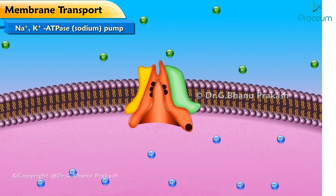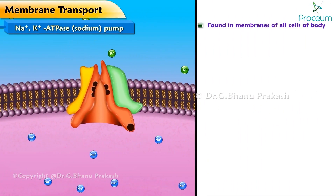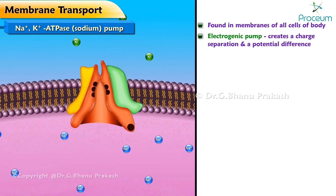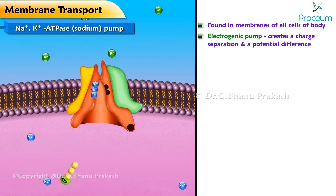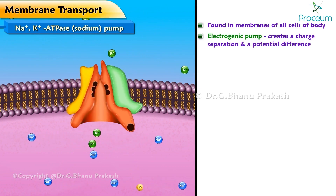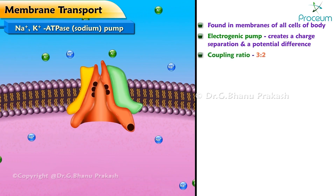Let's talk about the Na+/K+ ATPase sodium pump. It is found in the membranes of all cells in the body. It is the electrogenic pump because it creates a charge separation and a potential difference, which moves three positive charges, or three Na+ ions, out of the cell.